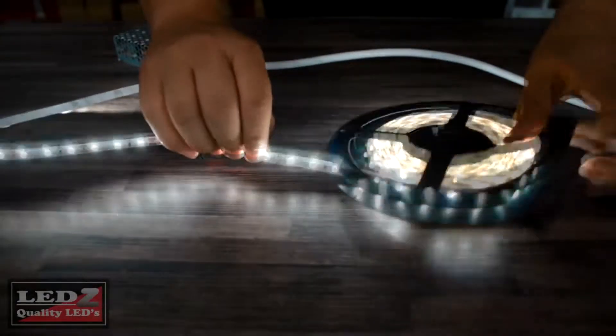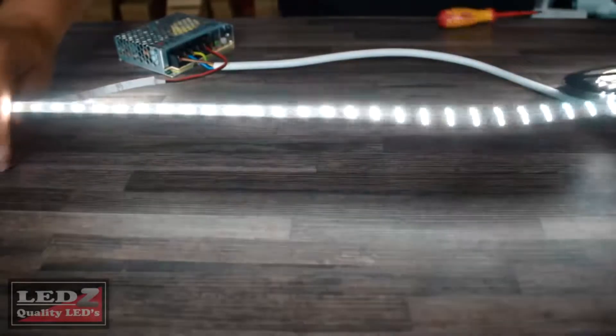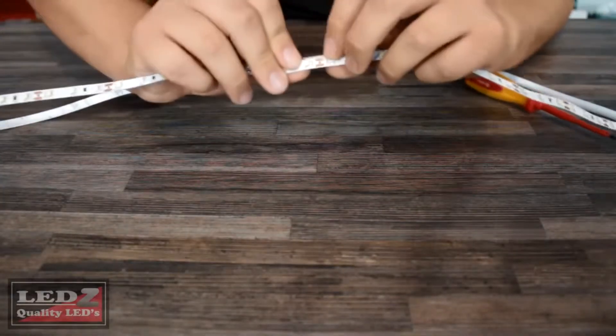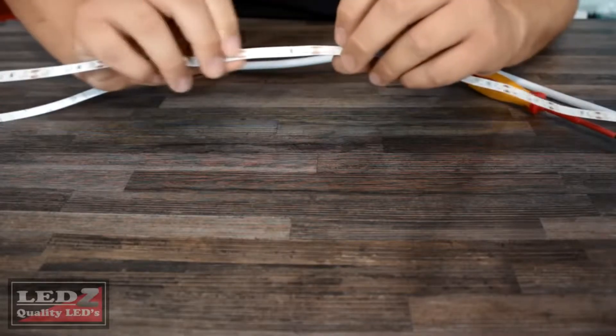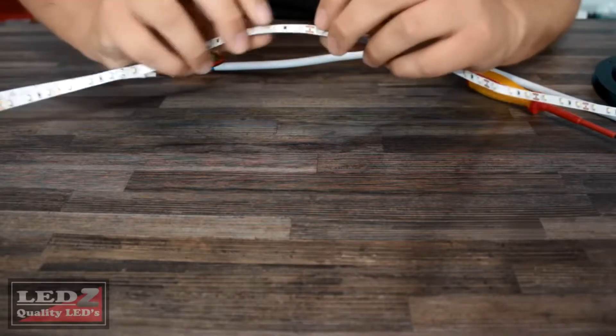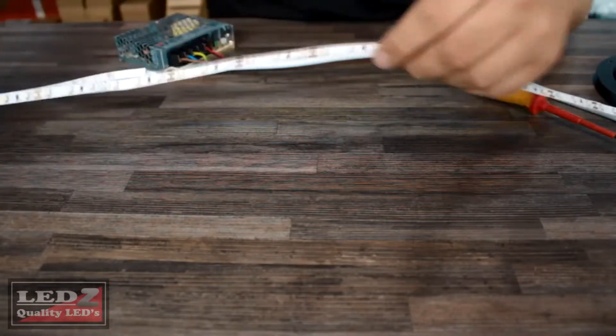Now what you can do is, now that you've tested the strip light to make sure everything is functional, you can go ahead and place it where you want to put it. As you can see here, you've got a cut point every three LEDs. So if it is too long for your application, you can just go and snip it there where the little scissor marks are.